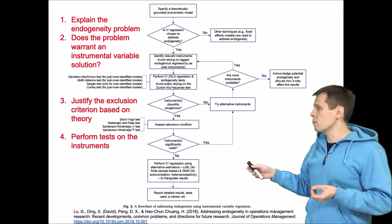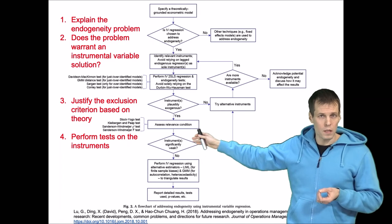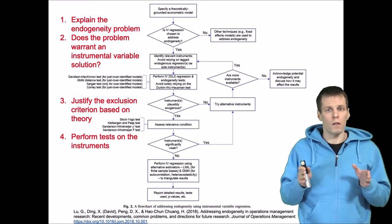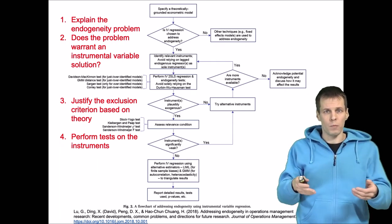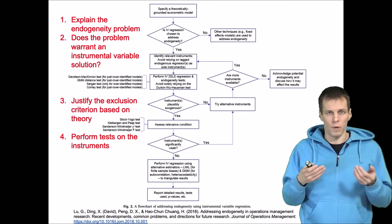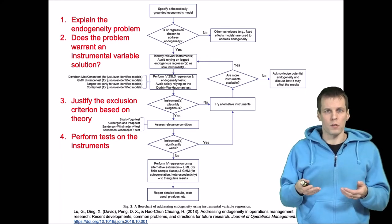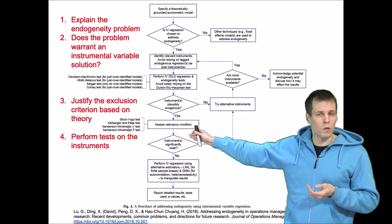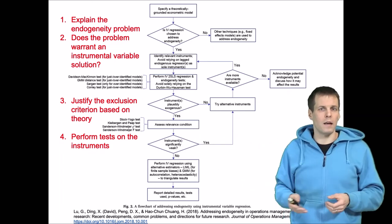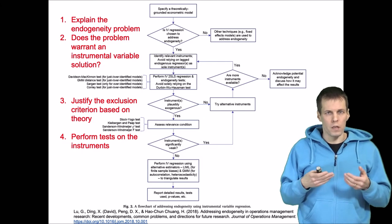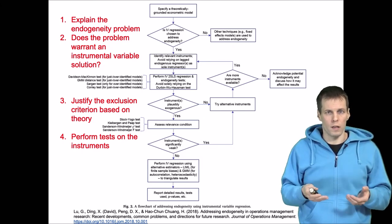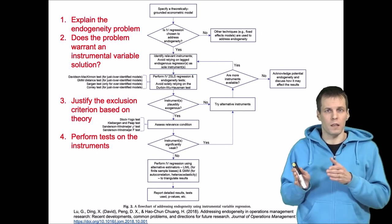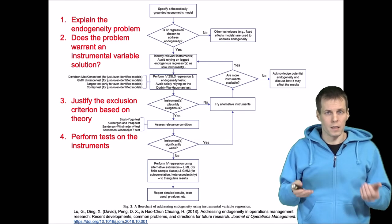The next step in the workflow is performing tests on the instruments. You need to assess the weak instruments problem. If the instruments are not correlated strongly with the instrumented variable, that increases the bias of instrumental variable estimation and makes those estimators less efficient. Also, it is possible to test the exclusion criterion in a way, and those tests assume that you have more instruments than you need, in which case the model is over-identified, and then you can test some of the instruments assuming that the others are valid in the exclusion criterion sense.